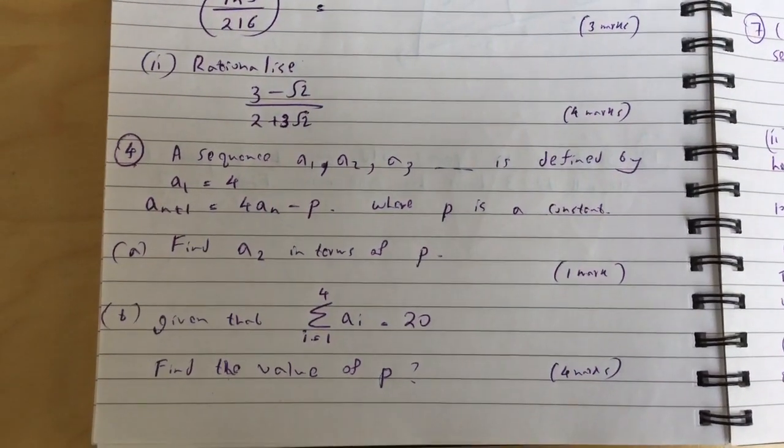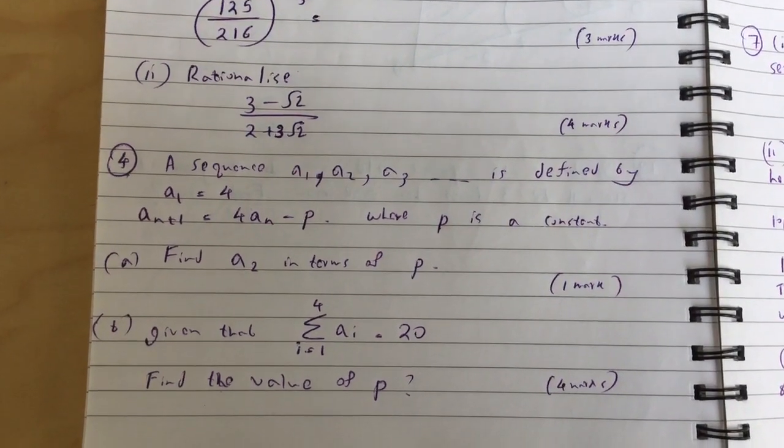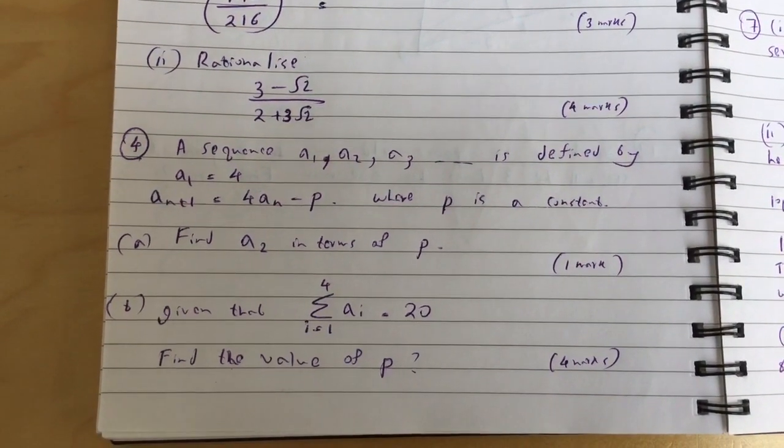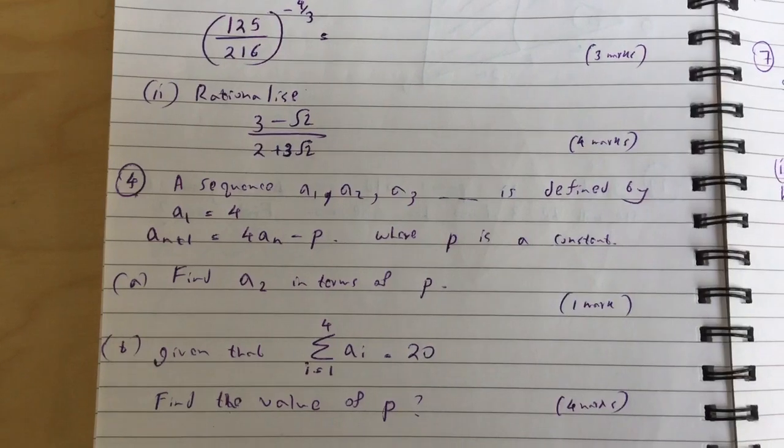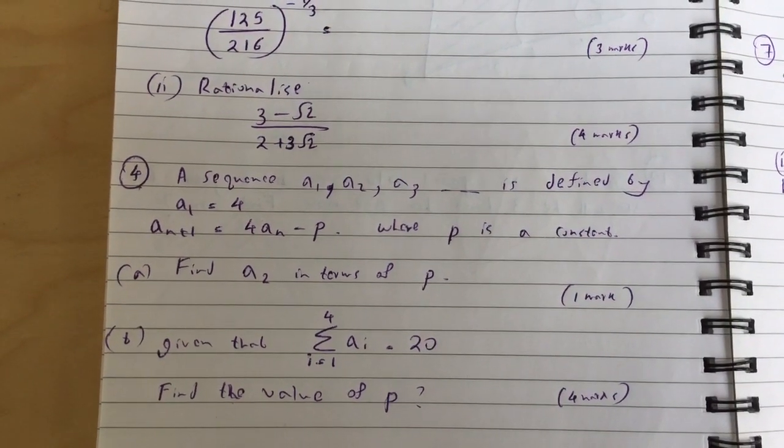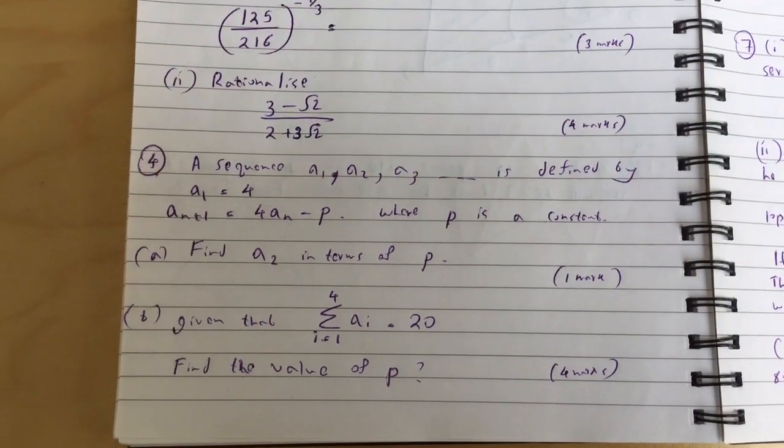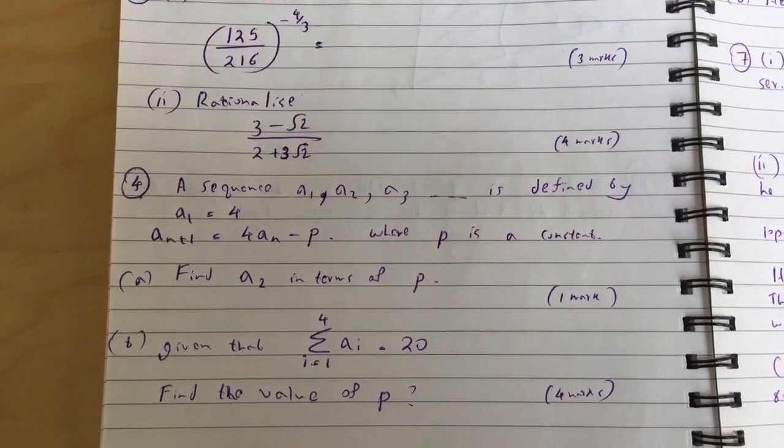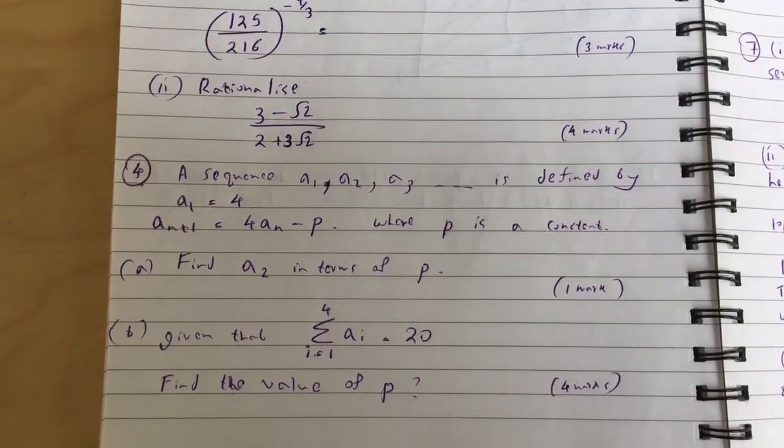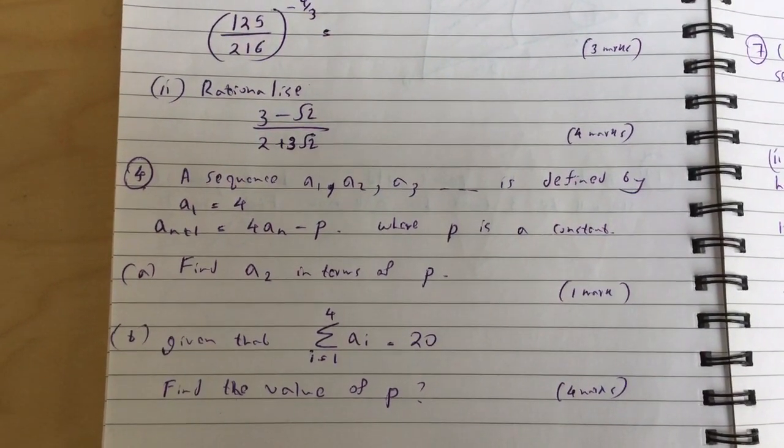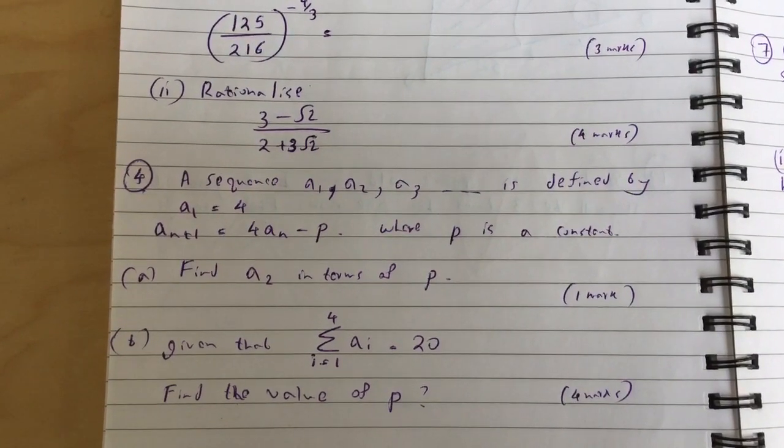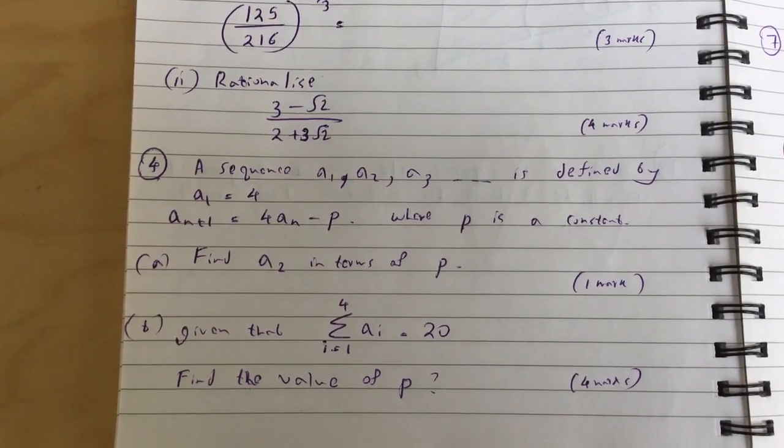Question 4: A sequence a1, a2, a3 is defined by a1 equals 4 and a(n+1) equals 4an minus p, where p is a constant. (i) Find a2 in terms of p. (ii) Given that the sum from i equals 1 to 4 of ai equals 20, find the value of p.